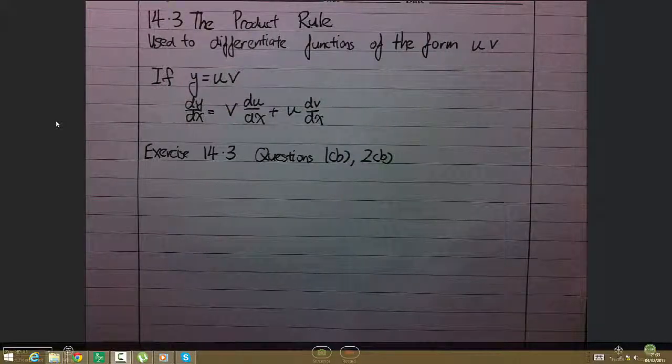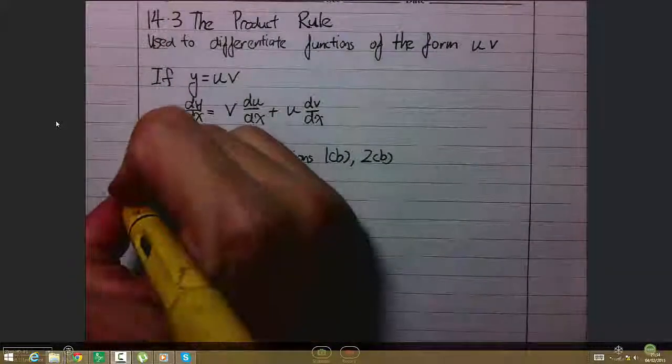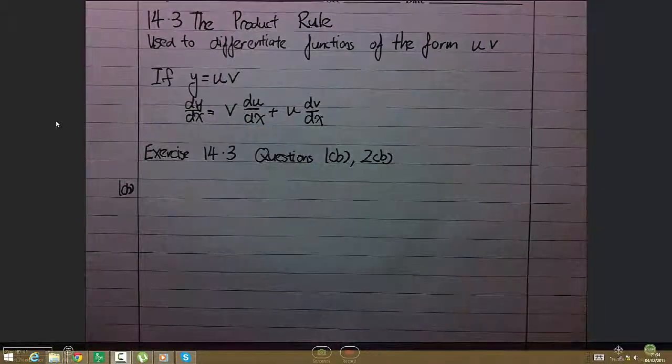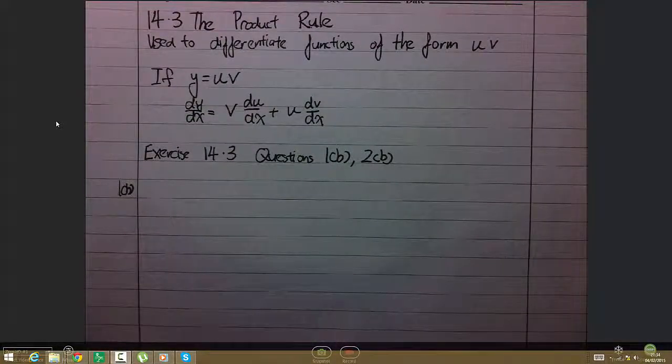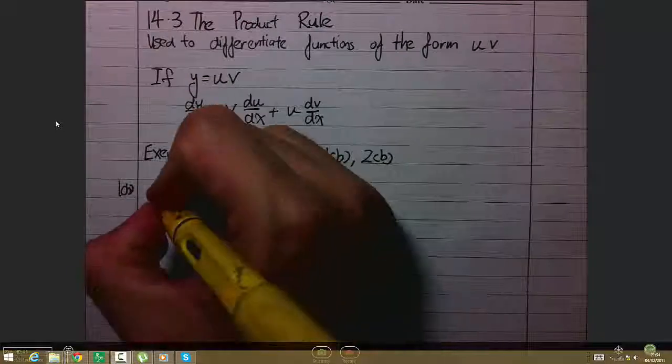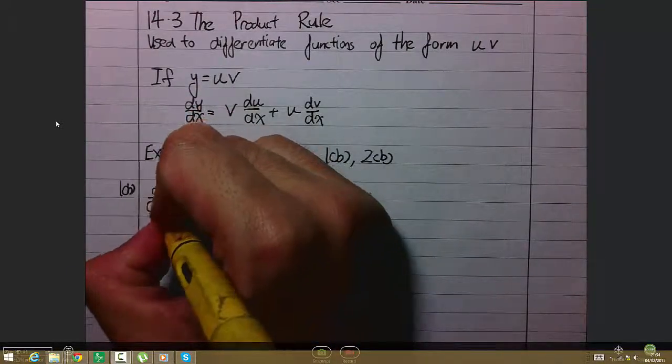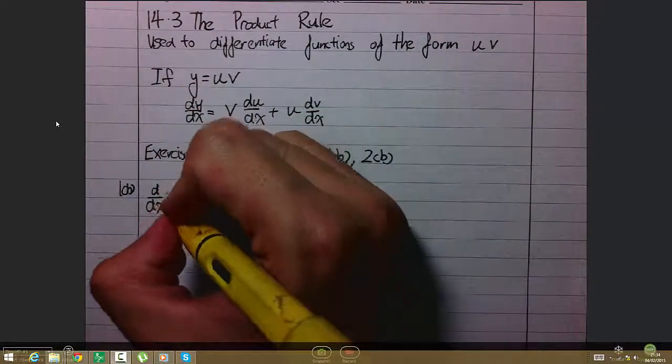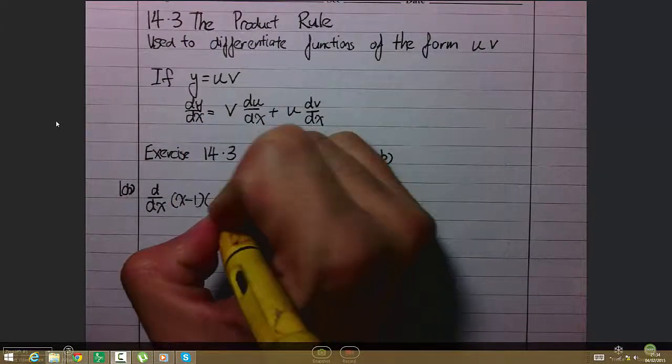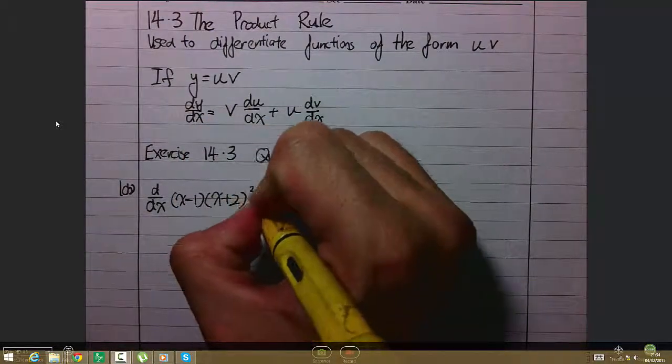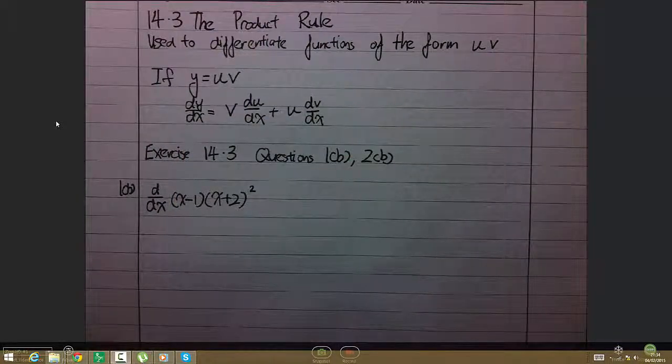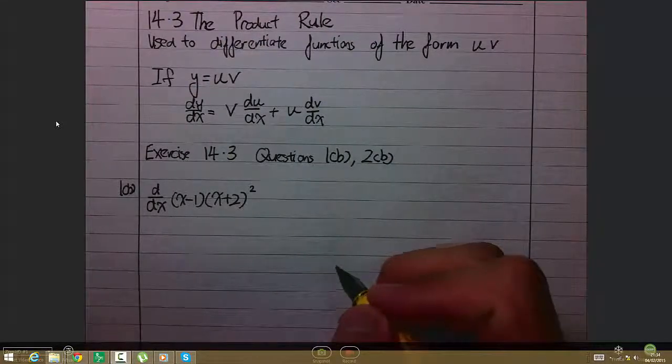This is known as the product rule. I'll show you how it's done for question 1b. Differentiate with respect to x: (x-1)(x+2)². First, we need to identify what is u and what is v.